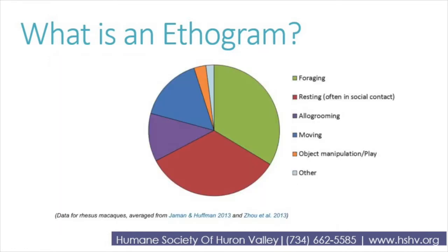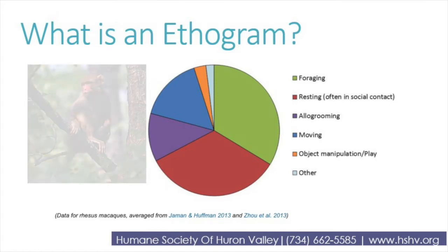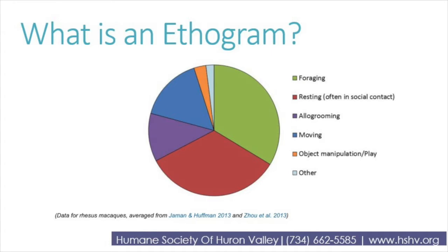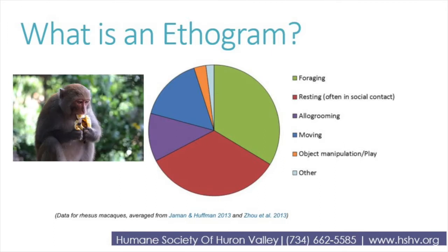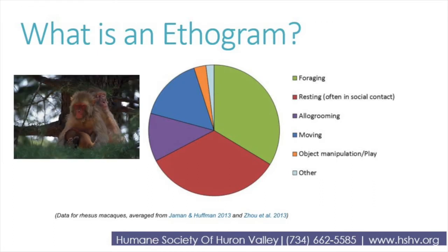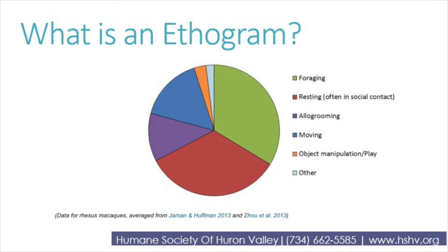Researchers can then take that information about how an animal is spending their time to answer questions. From an ethogram, we can look at this chart made about Rhesus macaques, which are a type of monkey. We can see that Rhesus macaques spend most of their time foraging — that's the big green section — which means looking for food. Then we can see by the large red section that Rhesus macaques also spend a lot of time resting or sleeping, usually in social contact.